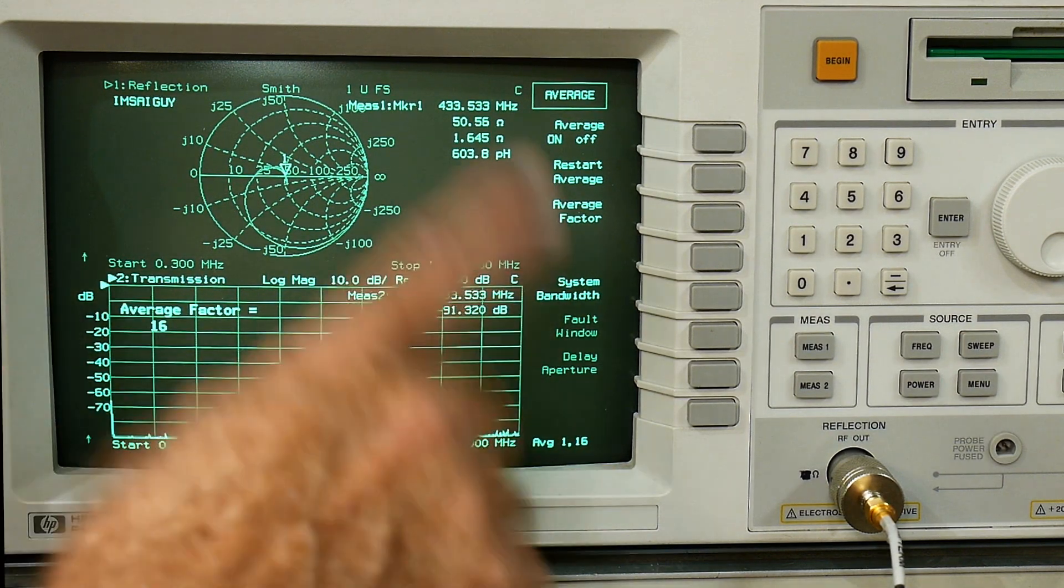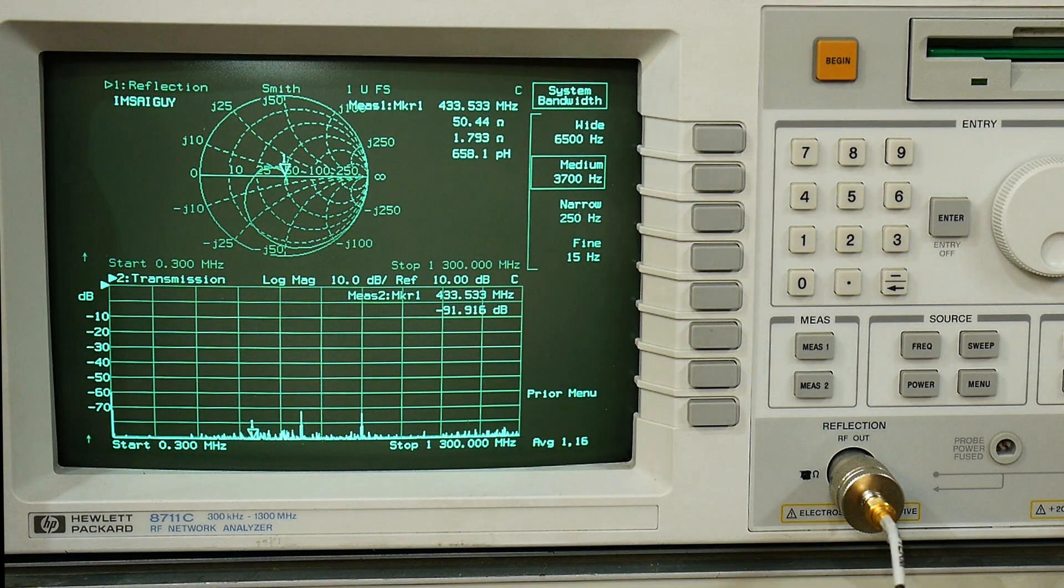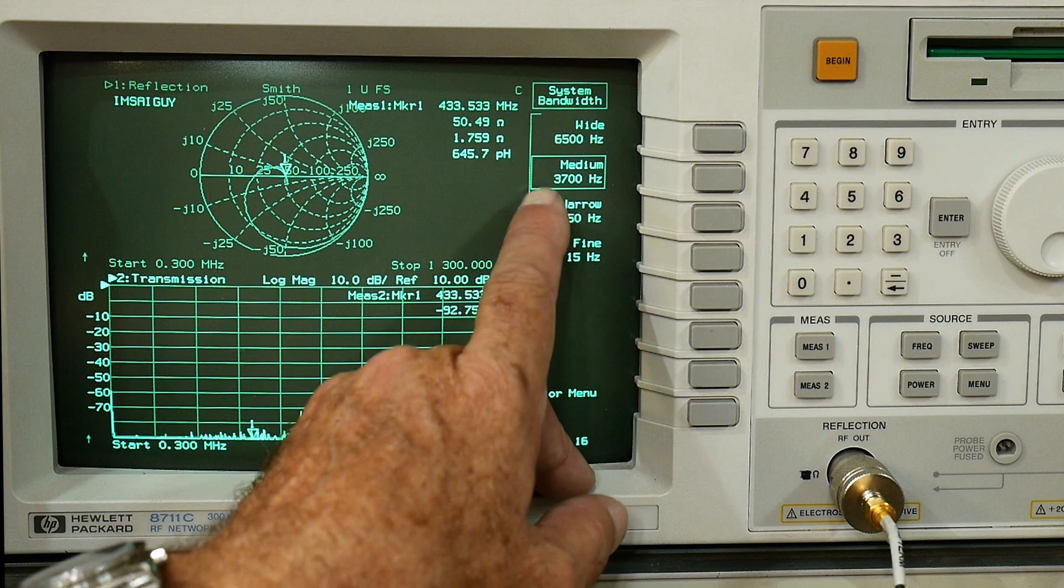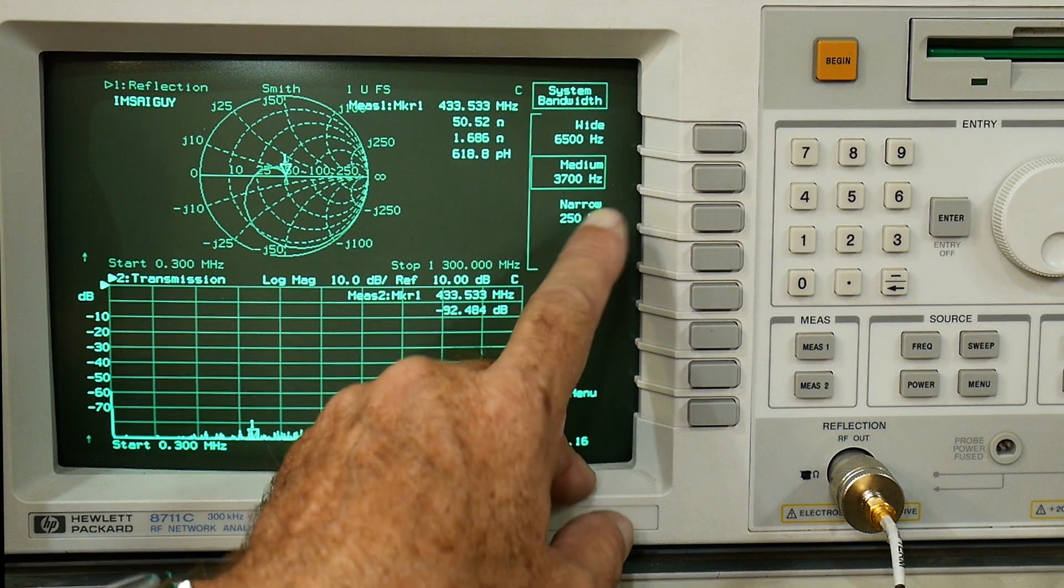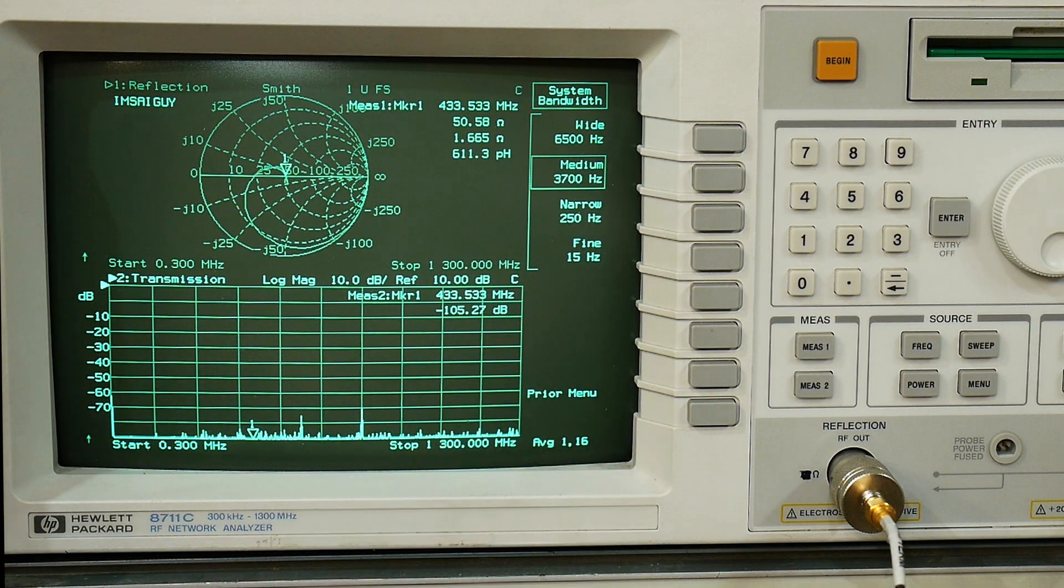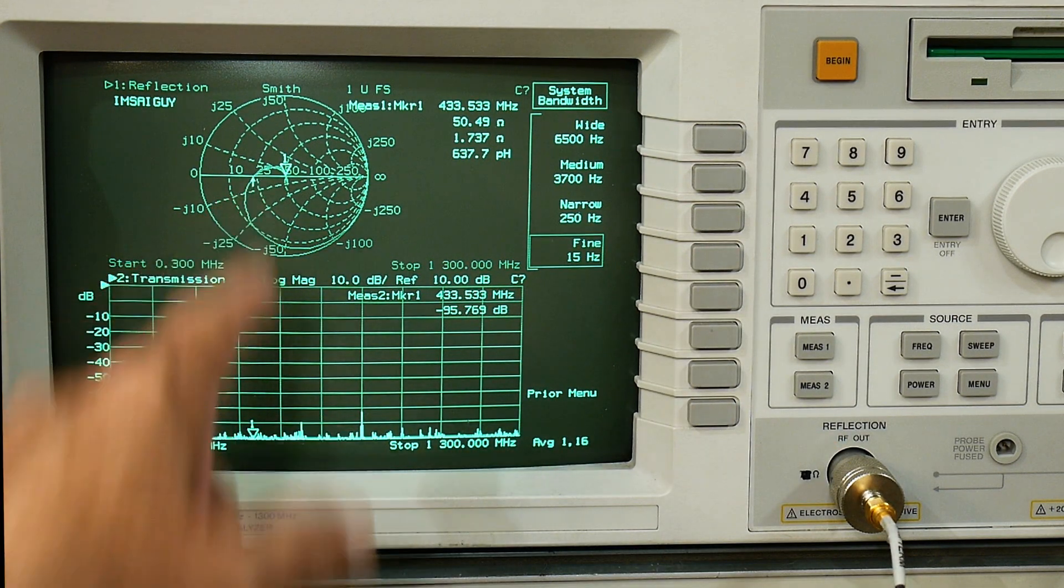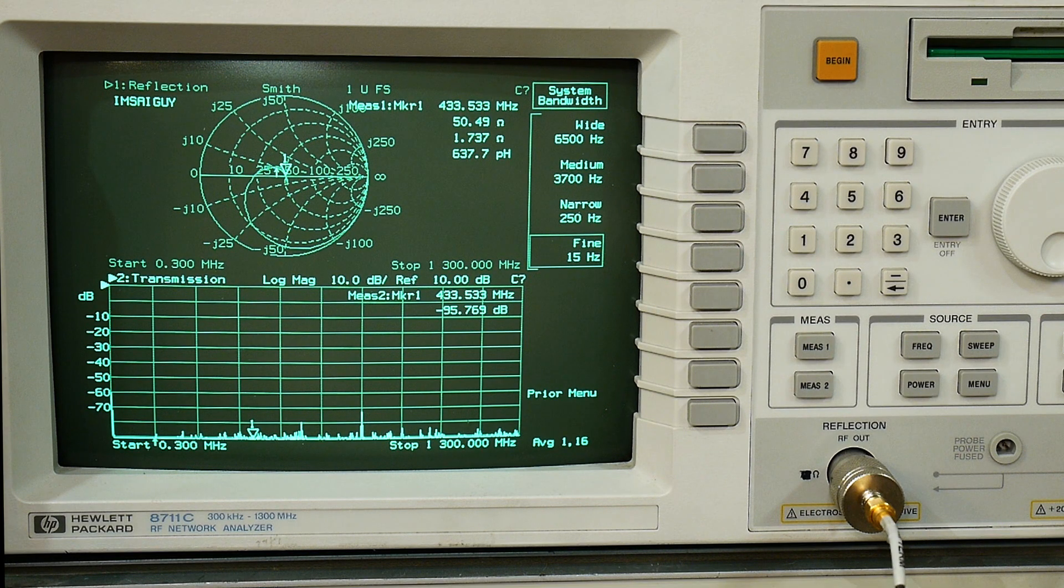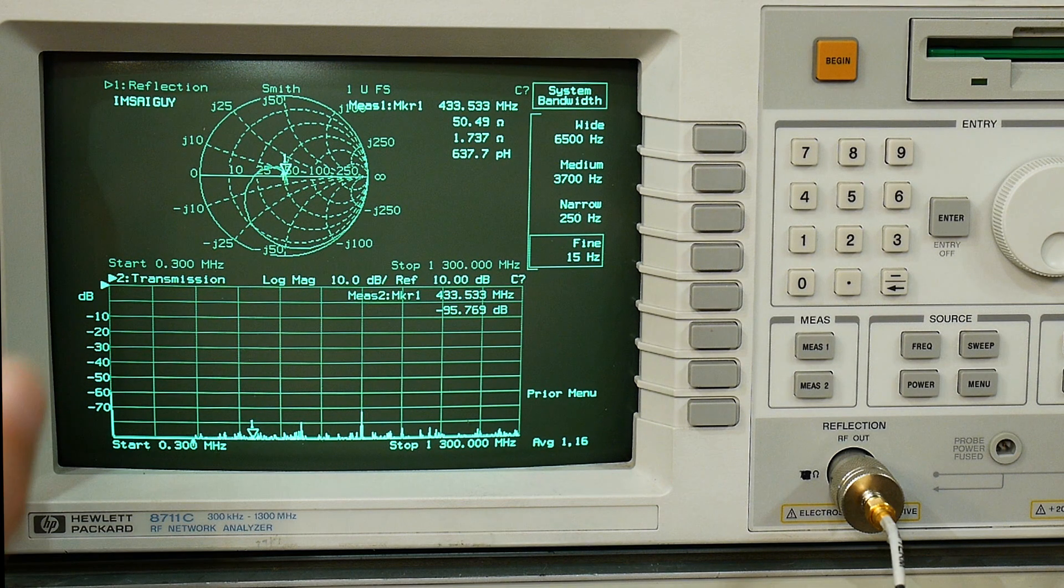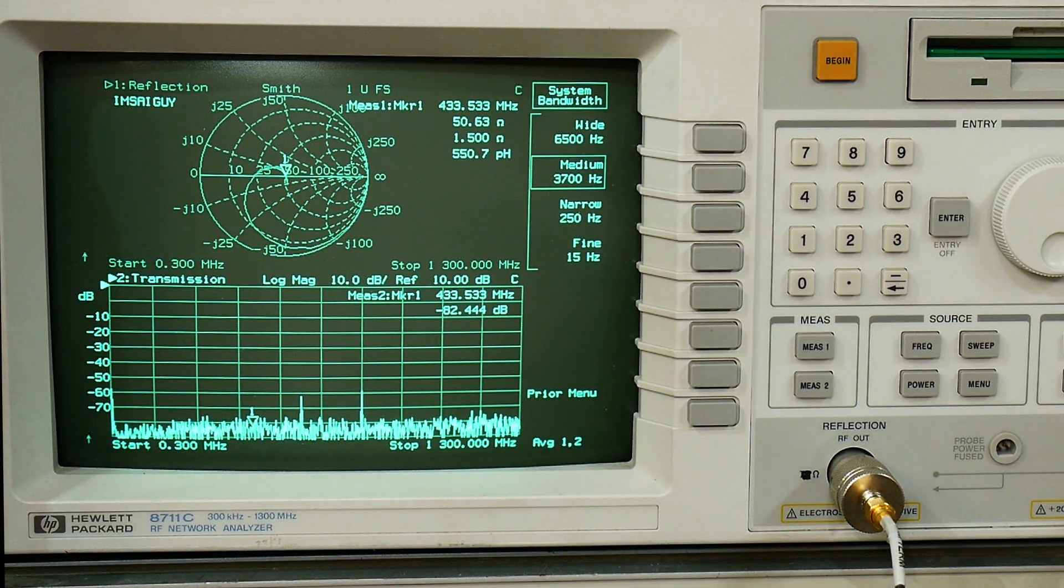You can also click on system bandwidth and it's set to 3.7 kilohertz right now. You can set it narrow to 250 hertz, you can set it to really fine, 15 hertz. So if you want to sweep something very accurately you can watch it sweep. It takes a very long time to sweep at 15 hertz resolution but if you're sweeping like a SAW filter you need really fine resolution. You can do that with these settings. So that's very cool.